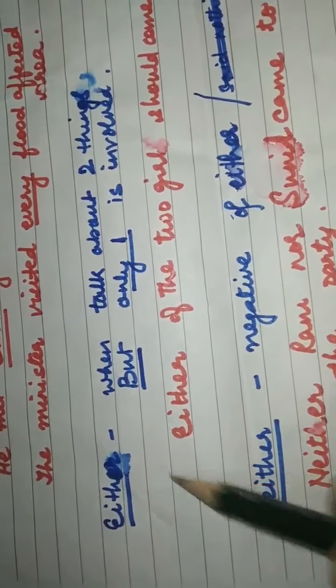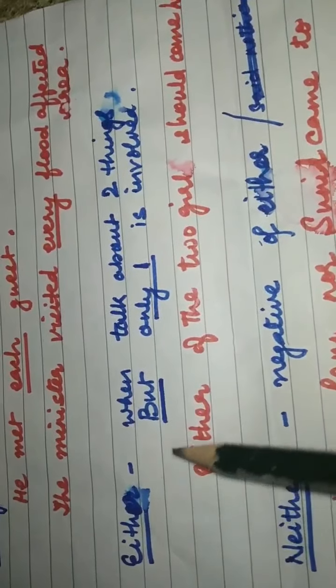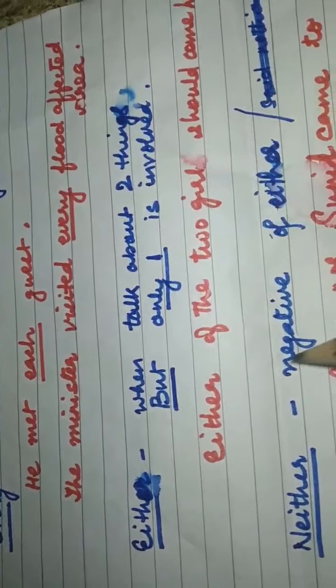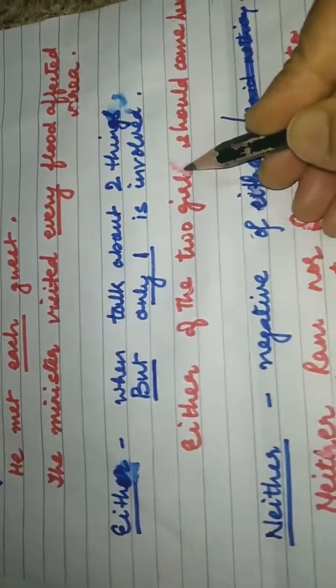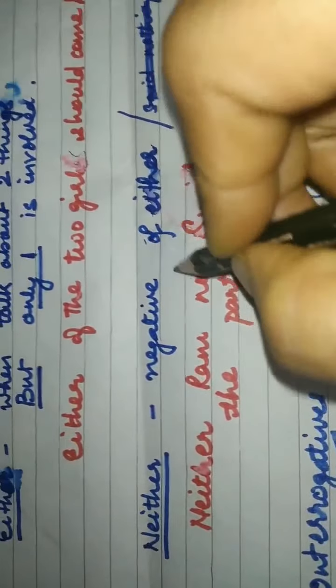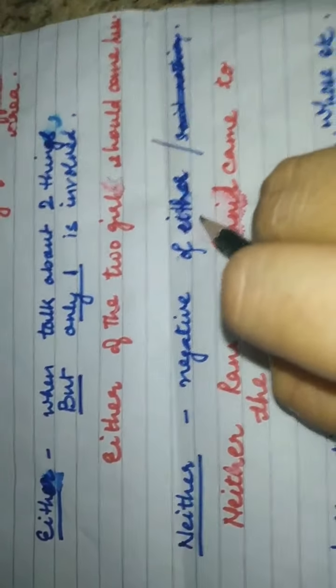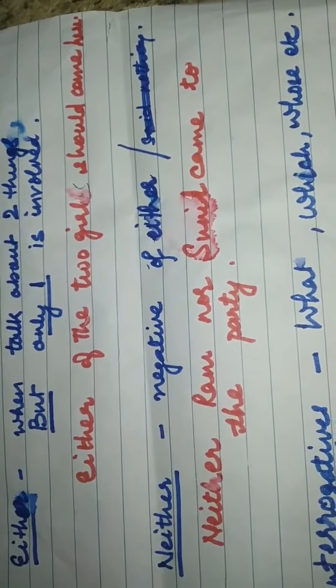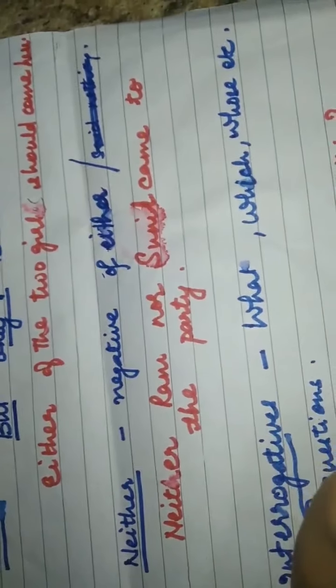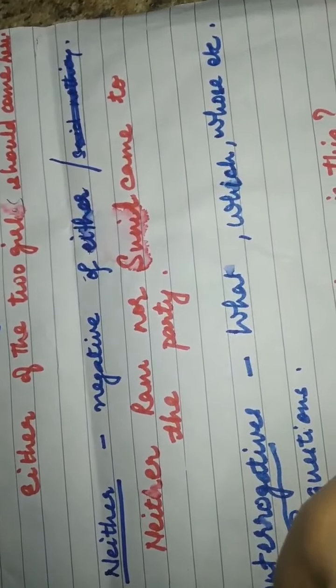Next, where do we use 'either' and 'neither'? 'Either' is used when we talk about two things and only one of them is involved — for example, 'either of the two girls should come here', meaning out of the two girls, one should come. 'Neither' is basically the negative form of 'either' — for example, 'neither Ram nor Sunil came to the party', meaning none of them came.